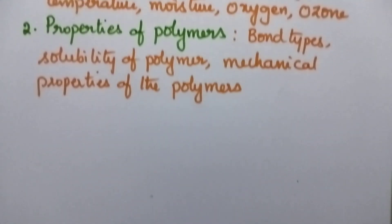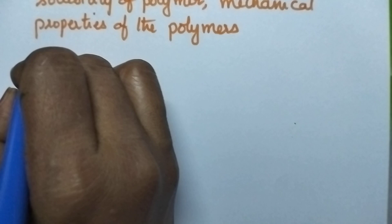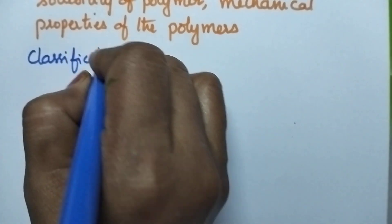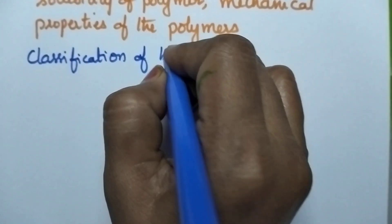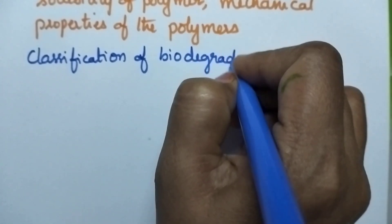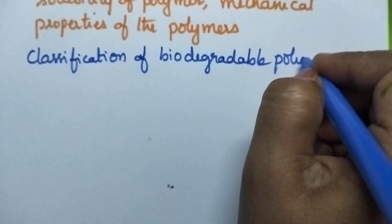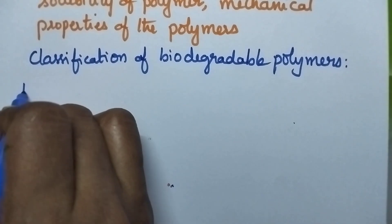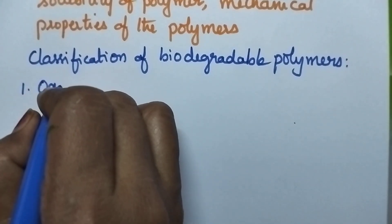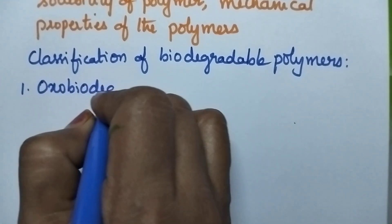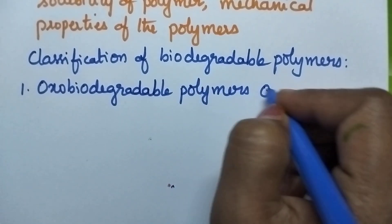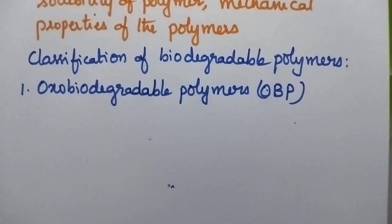Coming to the classification of biodegradable polymers. These biodegradable polymers can be classified into two types: one being oxo-biodegradable polymers, and the second one is hydro-biodegradable polymers.